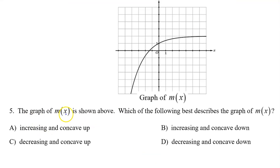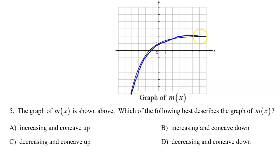Number 5. The graph of m of x is shown. Which of the following best describes the graph of m of x? m of x is increasing because of the way it rises from left to right, and it is concave down because of how it forms an umbrella shape. So: increasing and concave down — the answer is B.